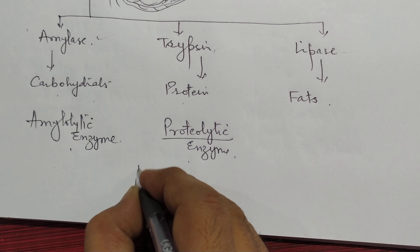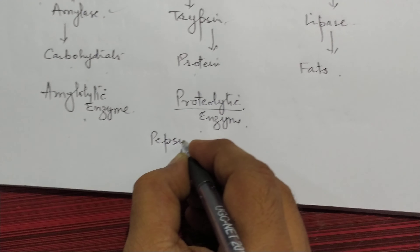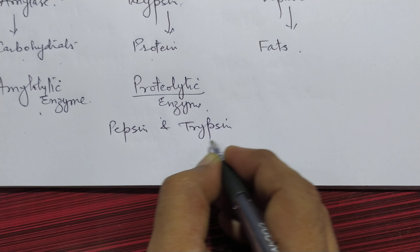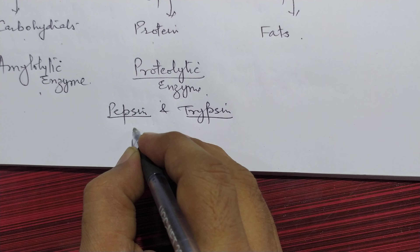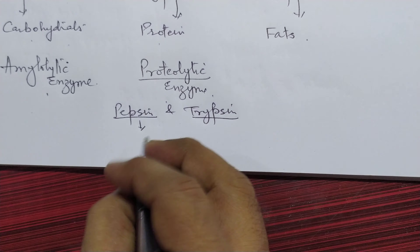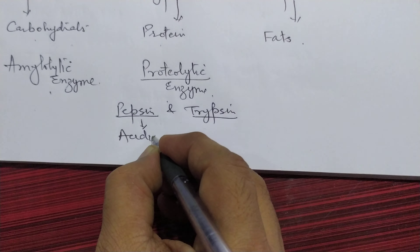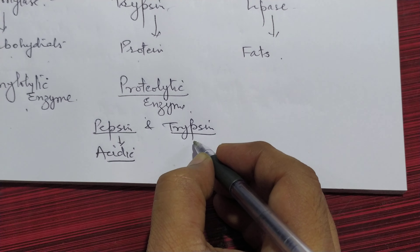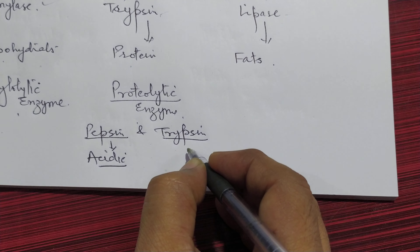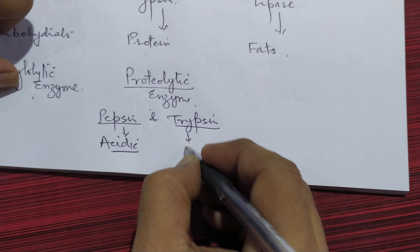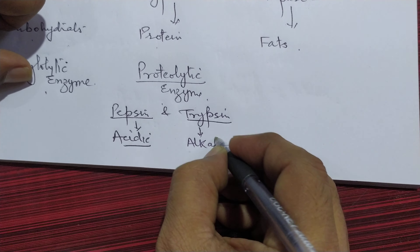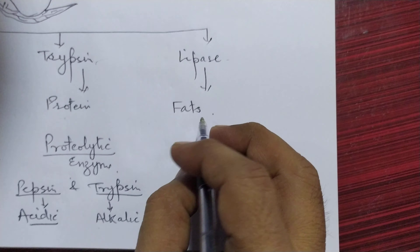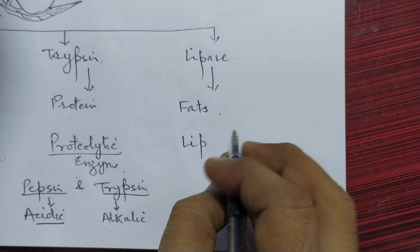So here one important question arises: what is the difference between pepsin and trypsin? Keep in mind that pepsin helps in the digestion of protein in an acidic medium, because in the stomach, due to HCL, there is an acidic medium. But trypsin also helps in the digestion of protein, but in an alkaline medium. This is one of the key differences. And lipase helps in the digestion of fat.